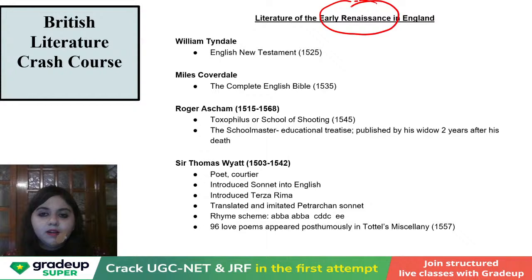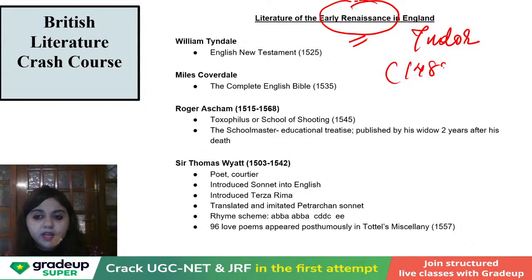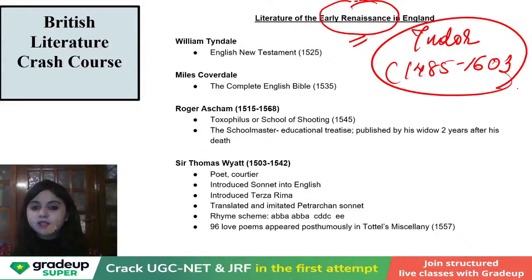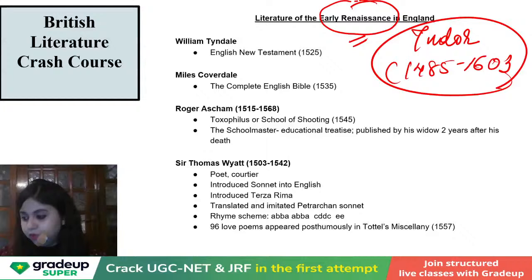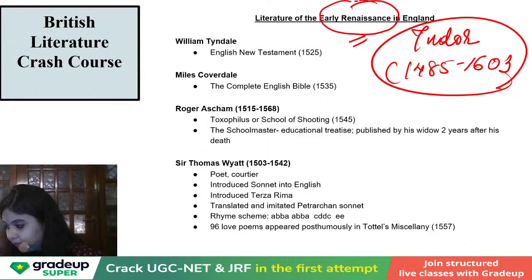Whenever we talk about the literature of the early Renaissance period, this is also called the early Renaissance period, the Tudor period, or the early Tudor period. The Tudor period is from 1485 all the way to 1603. Henry VII, Henry VIII, Edward, Mary, and Elizabeth — the three children of Henry VIII — these five rulers are forming what is called your early Renaissance or Tudor period.